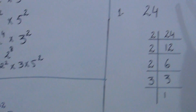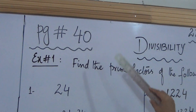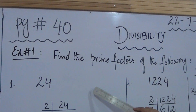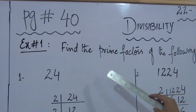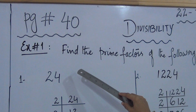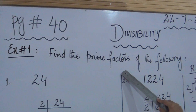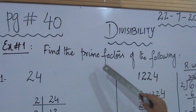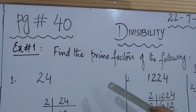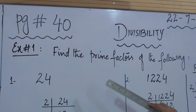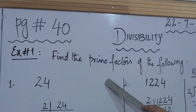Now, page number 40. There are two exercises on page number 40. The first exercise is to find the prime factors. Prime factors is the same as we have done on page number 38 — prime factorization.